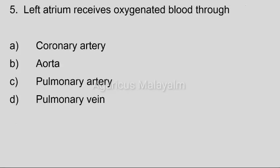Fifth question: Left atrium receives oxygenated blood through — option A: coronary artery; option B: aorta; option C: pulmonary artery; option D: pulmonary vein.